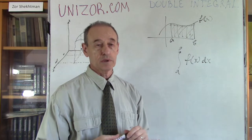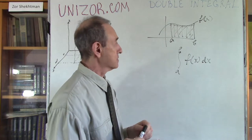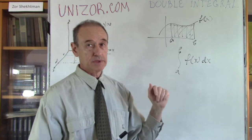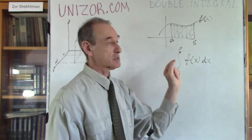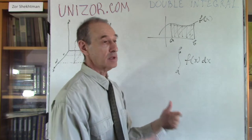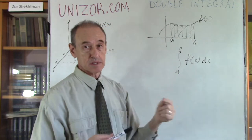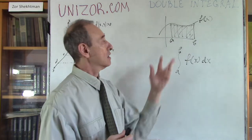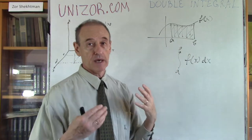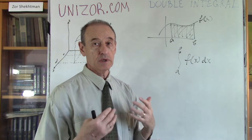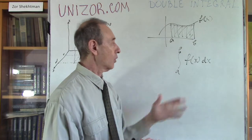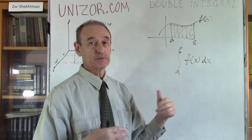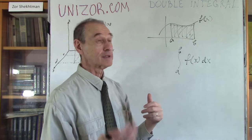We should have proven a theorem that regardless of how we divide our segment AB into smaller pieces — in the limit when the biggest of these pieces is shrinking down to zero — the sum will have one concrete limit, which is called an integral. So an integral is basically a limit of so-called integral sums.